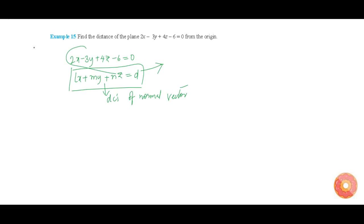Let us try to write this Cartesian form of the equation into this. Here, the direction ratios of the normal vector are 2, -3, and 4.